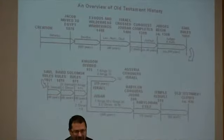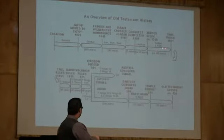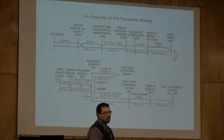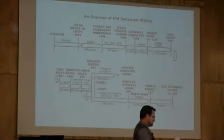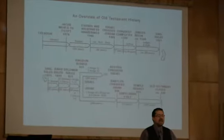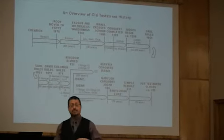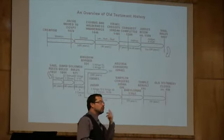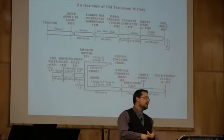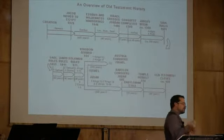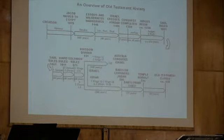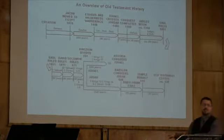Samuel is the last of the judges. He is very interesting because he holds three roles. He was a priest in the nation of Israel, and he also heard from the Lord directly, so that made him a prophet. Just because you were a priest didn't mean you heard from God directly — often prophets were separate from priests. But he was prophet and priest, and because he was an appointed judge, he held that position as a leader. So he was prophet, priest, and judge — and nobody had ever done that before.